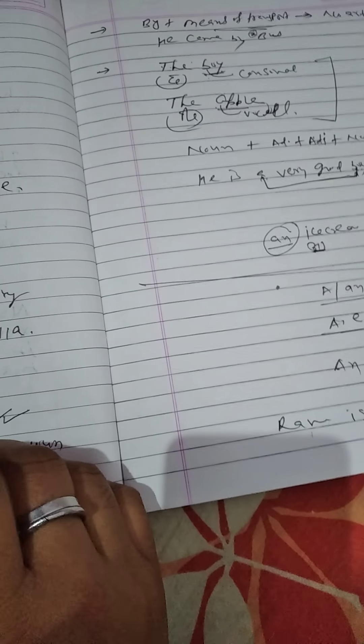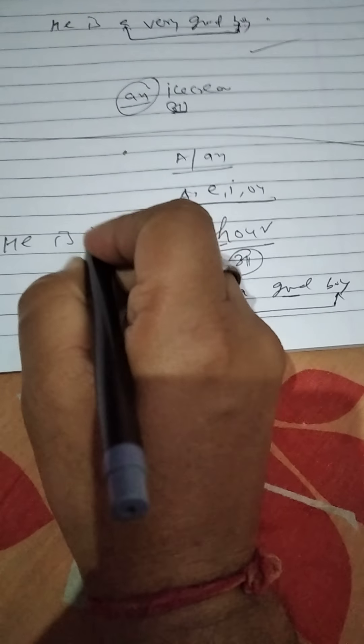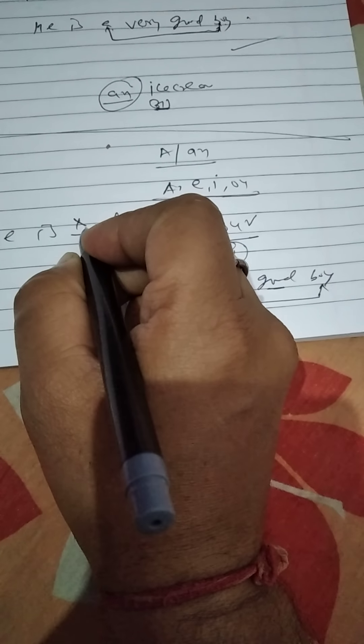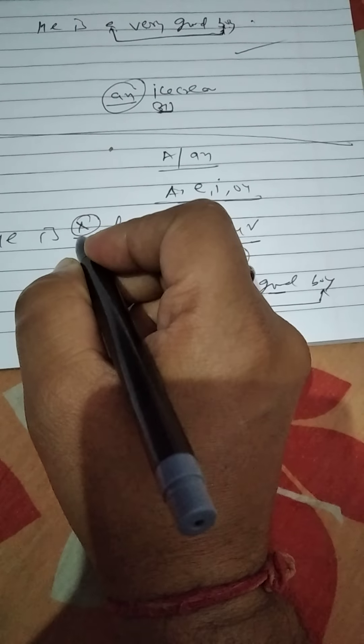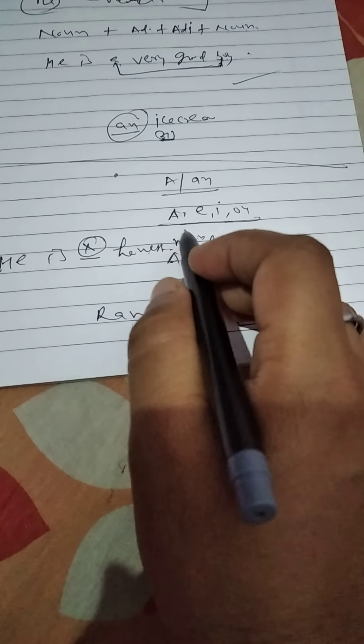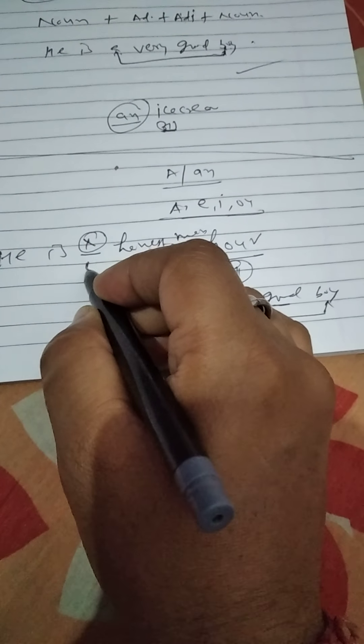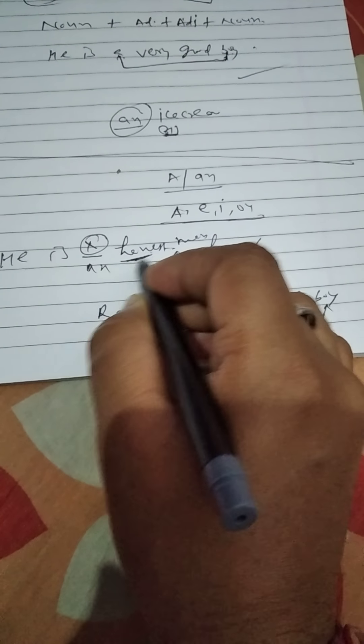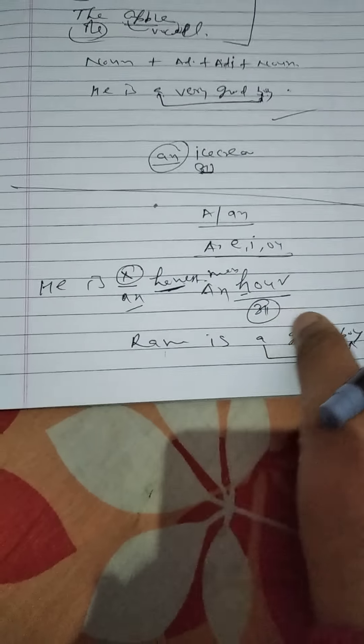Without a noun, the adjective will not take any article. 'He is honest' — it will not take any article because there is no noun after the adjective, so we will not use any article. But if you say 'He is an honest man,' it takes AN because the pronunciation of 'honest' begins with a vowel sound — so it takes 'an honest man.'